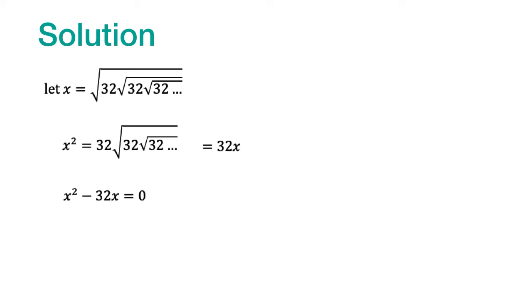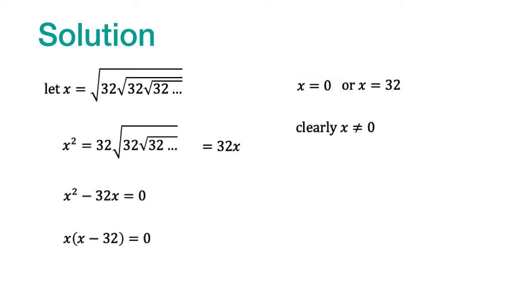We can factor out an X and write the equation in this form. From this it is clear that X could be either 0 or 32. Clearly X cannot be 0 because this is a positive number, and therefore we go with X equals 32. So the correct answer is option B.